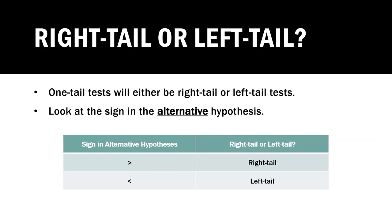Notice how these signs almost look like arrows. The greater than sign looks like an arrow pointing to the right, so it's a right-tail test. The less than sign looks like an arrow pointing to the left, so it's a left-tail test.